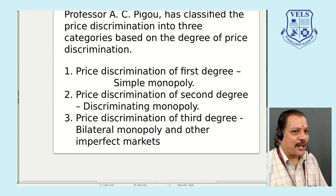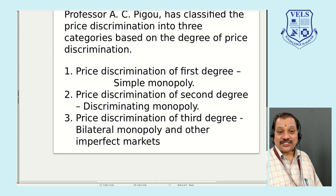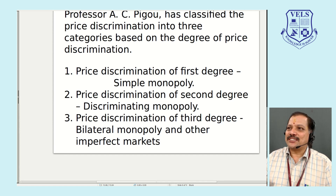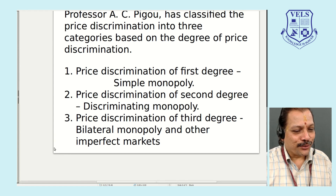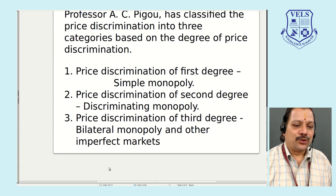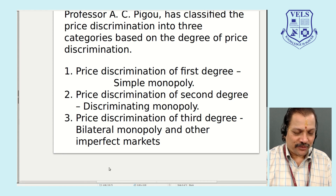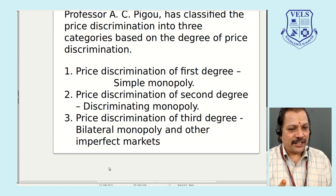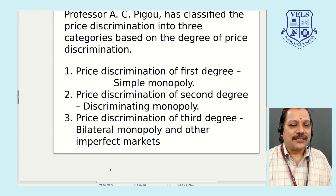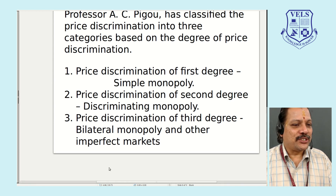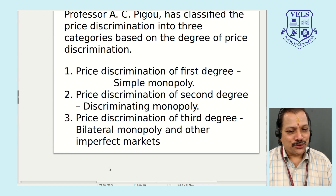In the next class, we are going to study how price is determined under the business trade cycle, which has different phases. For exam preparation, Section A questions may include: define monopoly competition or define price discrimination. Section B questions may include: explain different types of price discrimination, or how price and output are determined under monopoly. Prepare well and do well. Thank you, may God bless you.